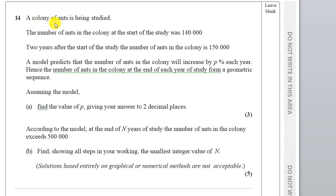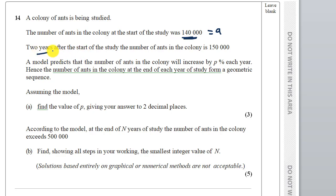A colony of ants is being studied. The number of ants in the colony at the start of the study was 140,000 — so this is A. Two years after the start, N is equal to 2.